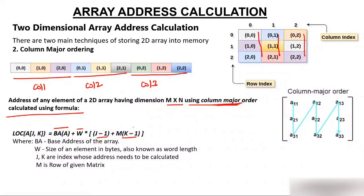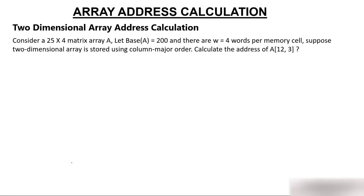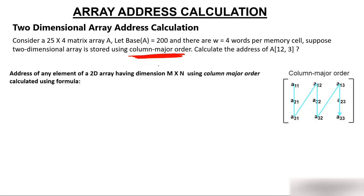In column major order, the formula is the same as row major order but the change is: you multiply column by row instead of row by column. So where row major uses (j−1)×N, column major uses (k−1)×M, where M is the number of rows. Here, Base(a) is the base address, W is the word length, j and k are the indices, and M is the row count of the given matrix. Now you have a question — try solving it using column major order and comment your answer below.